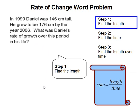Step one, find the length. We are going to find how much he grew within this period. So we take the longer length and subtract the shorter length, and that gets us 30 centimeters.